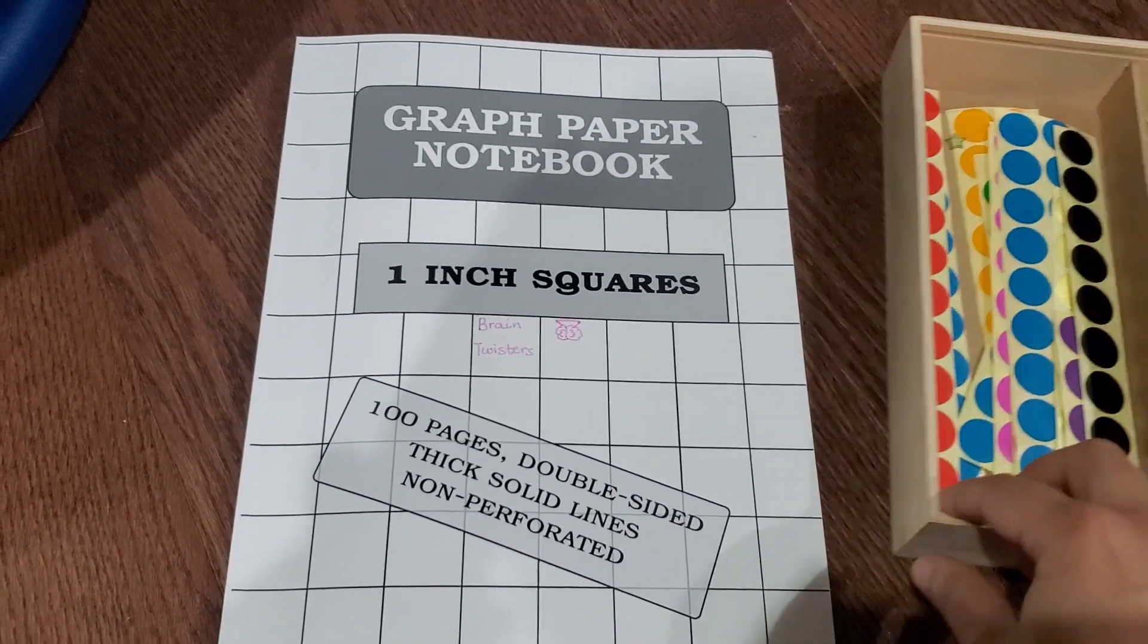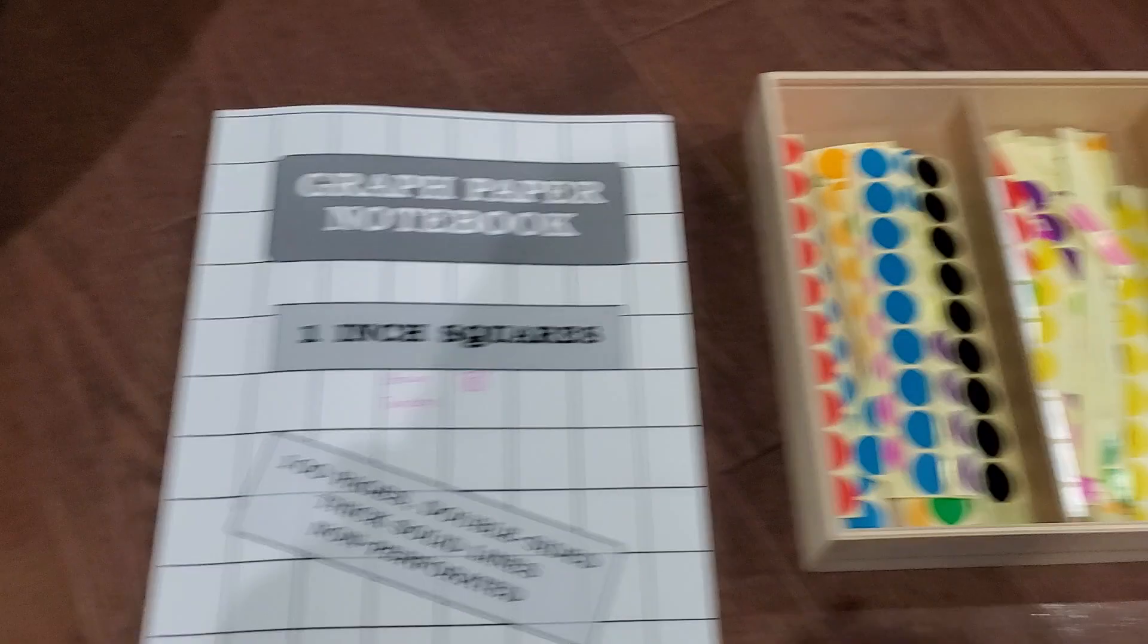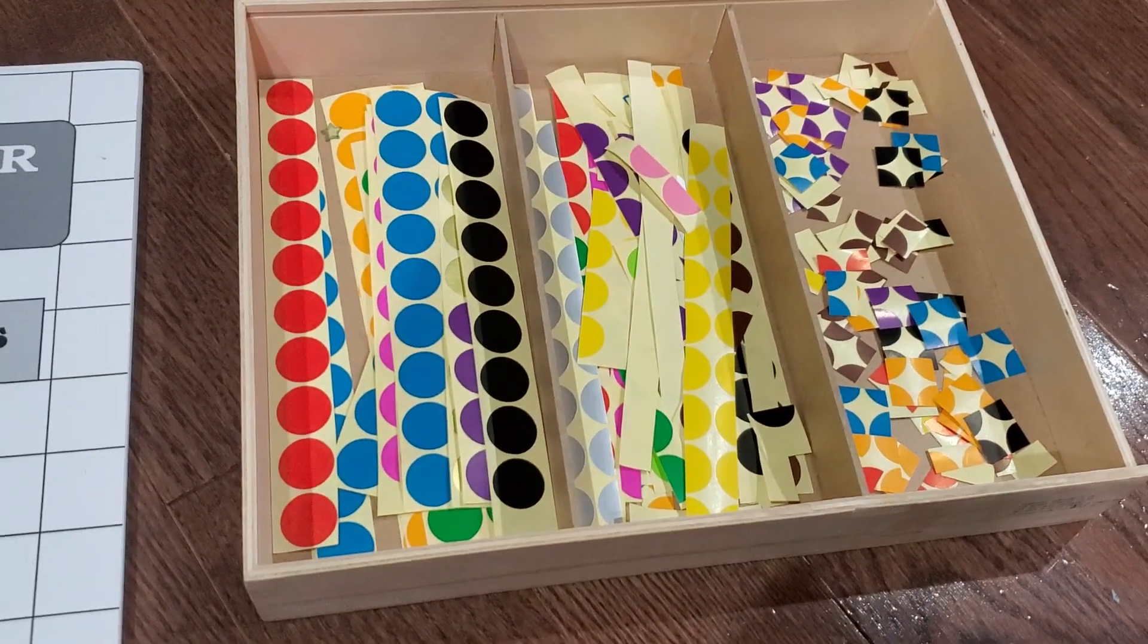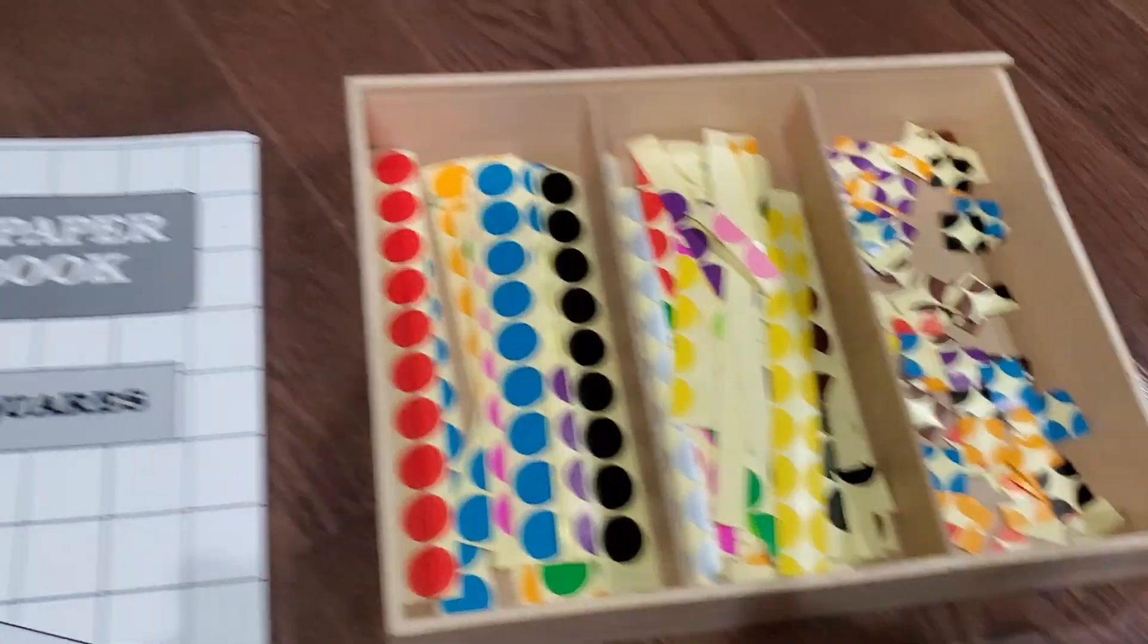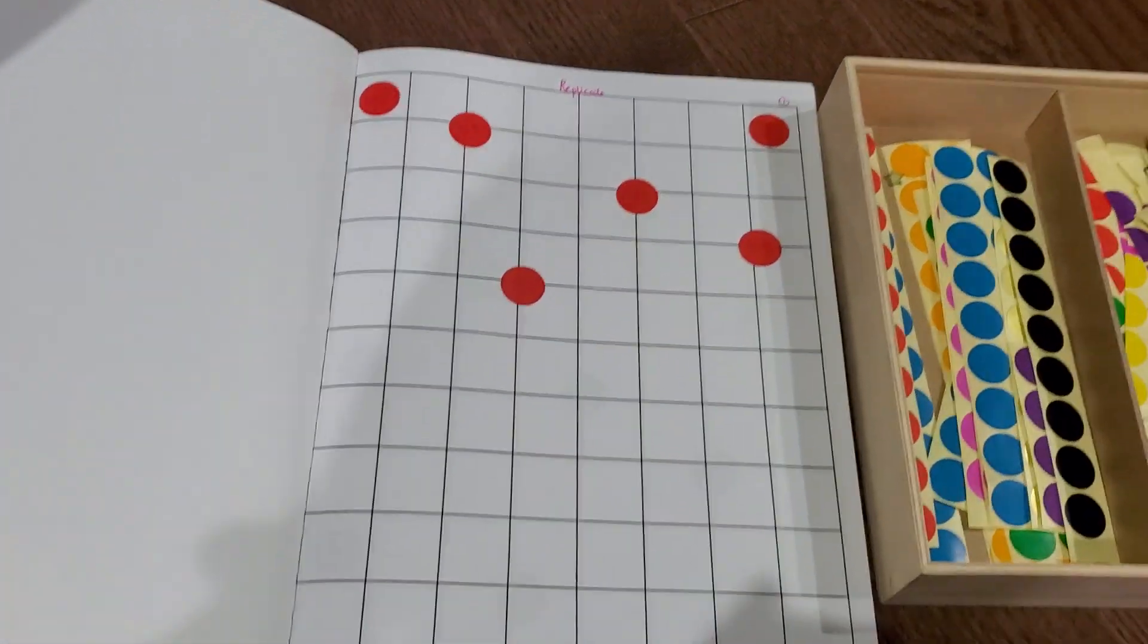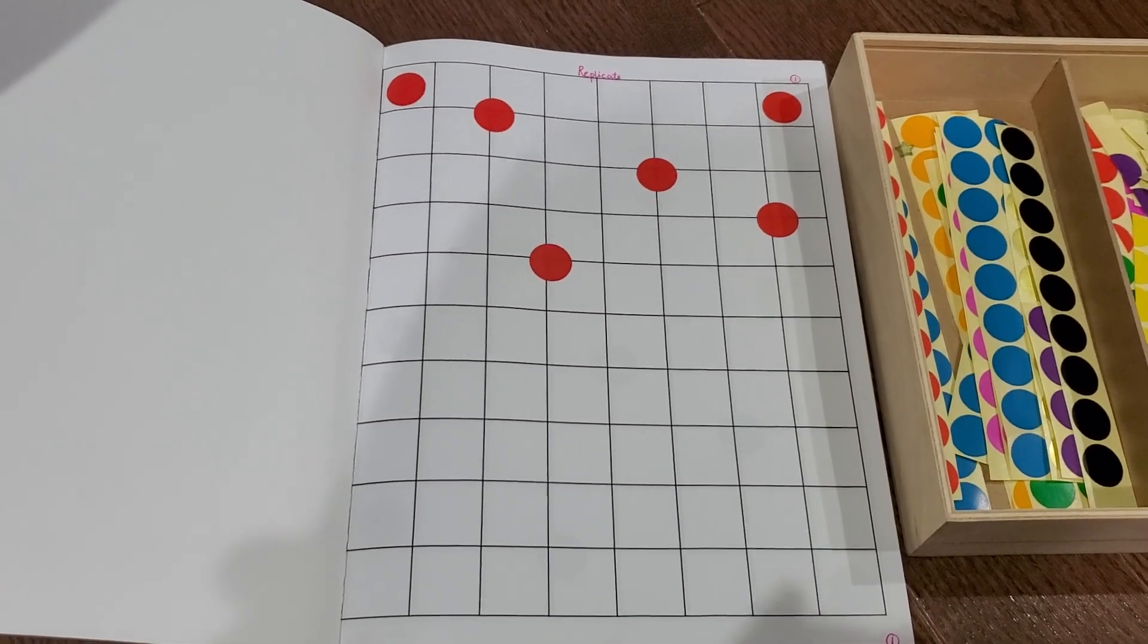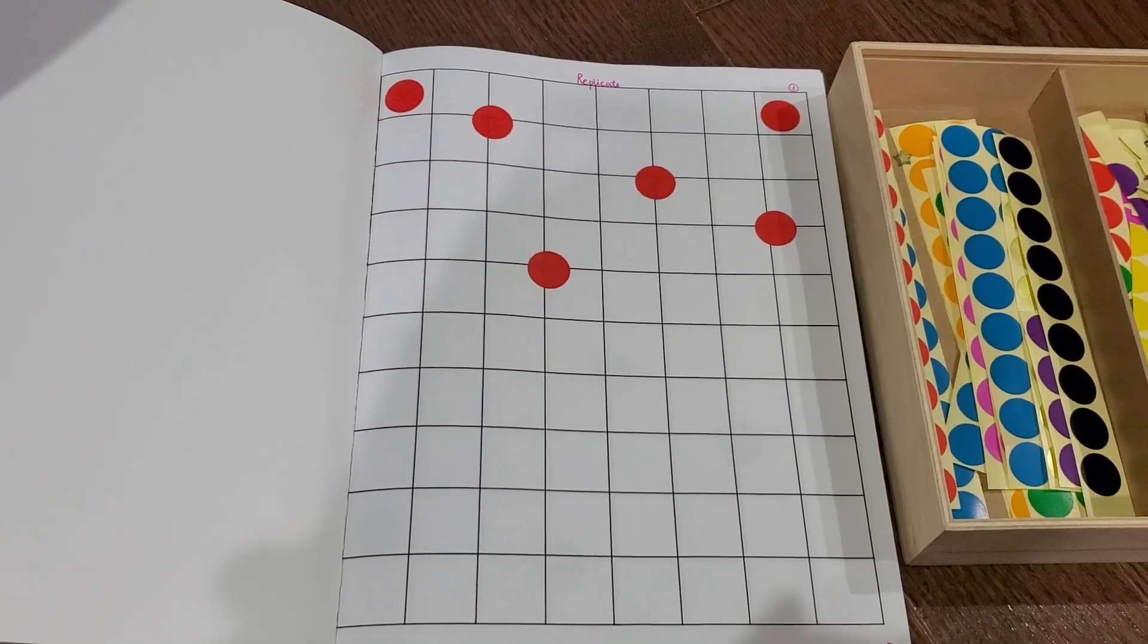Let me open it and show you exactly what we're going to do. As you can see, it's a graph paper and you must be wondering why are these all stickers right here. All my activities are sticker based. This activity is all about looking, observing and replicating.